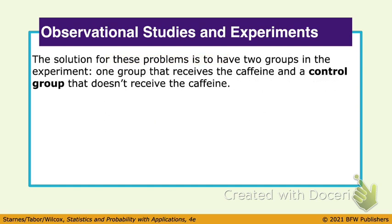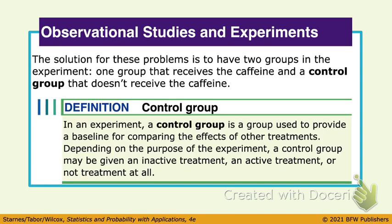We need a control group. To fix that, we separate a group of students that don't get the treatment — some students get the cola, some don't. That would be a control group. It gives us a baseline for comparing. A control group may get an inactive treatment — that's called a placebo. We want to make sure everybody is treated the same way; everybody's going to get some cola, either caffeinated or regular, so no one knows which they received.